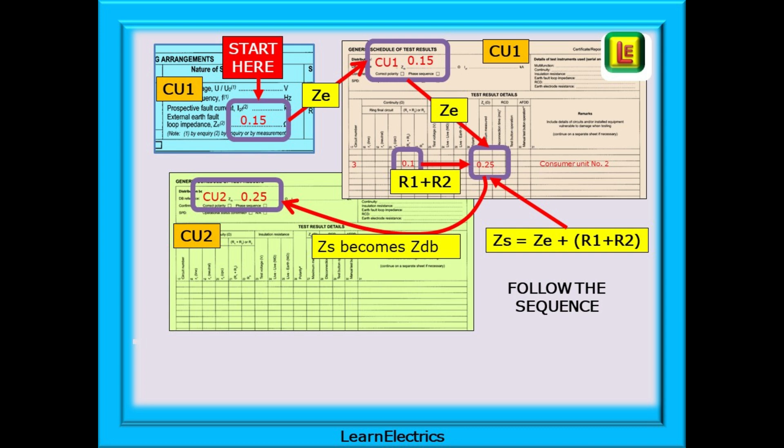Now add the ZE or ZDB to the measured R1 plus R2. 0.15 plus 0.1 gives us 0.25 ohms for CU2 ZS. Then on consumer unit number 2 test results page write in 0.25 ohms for ZDB.